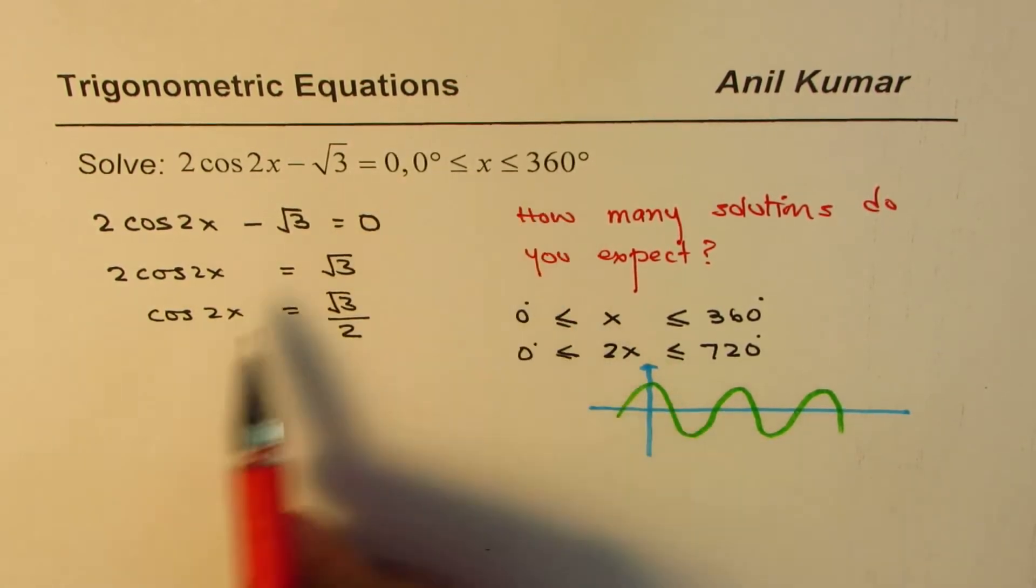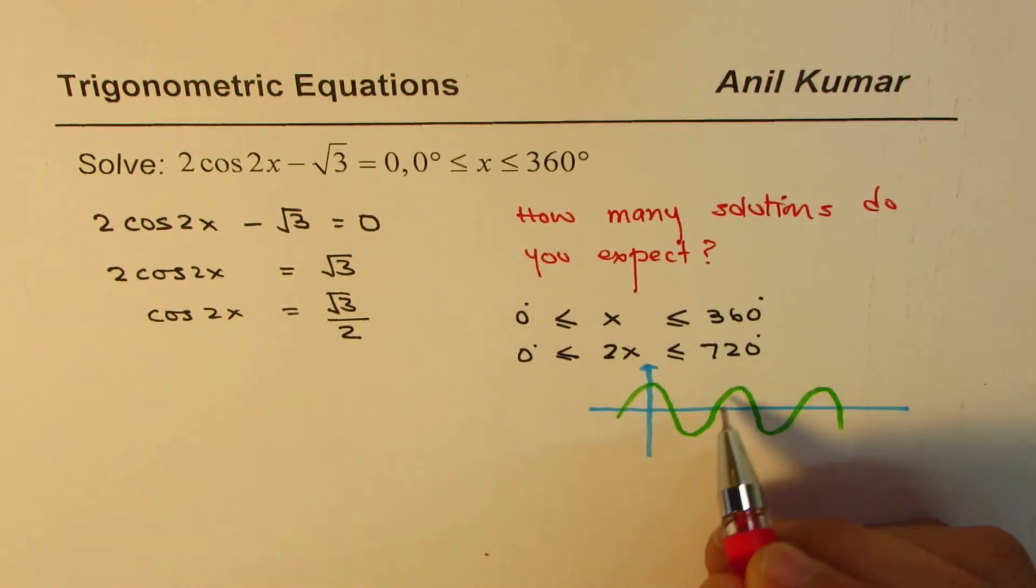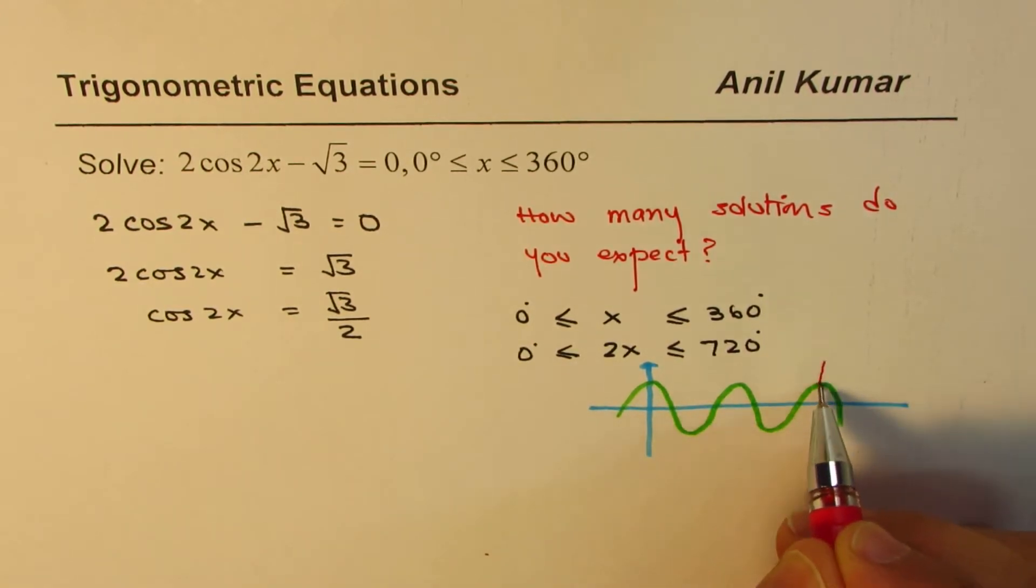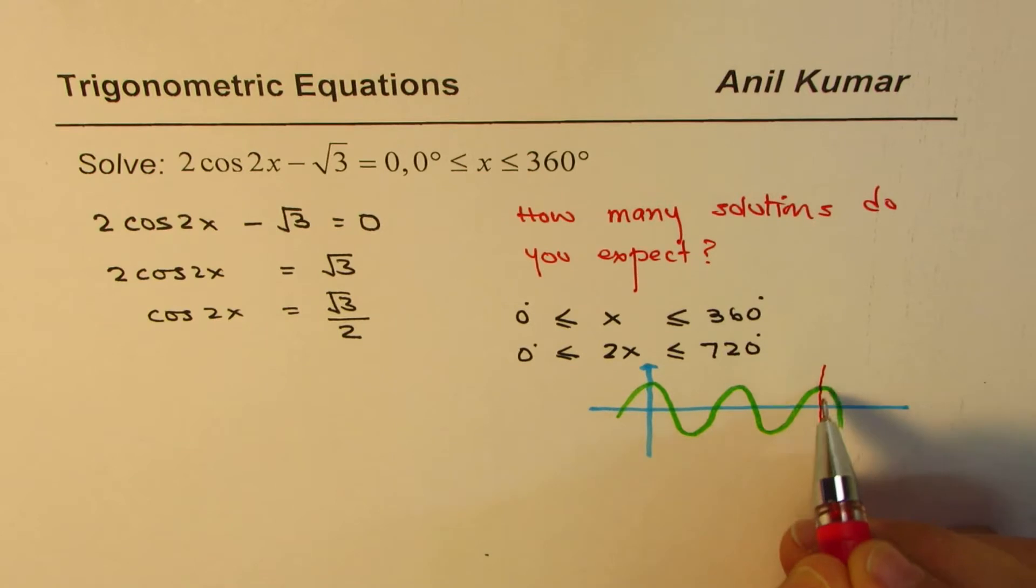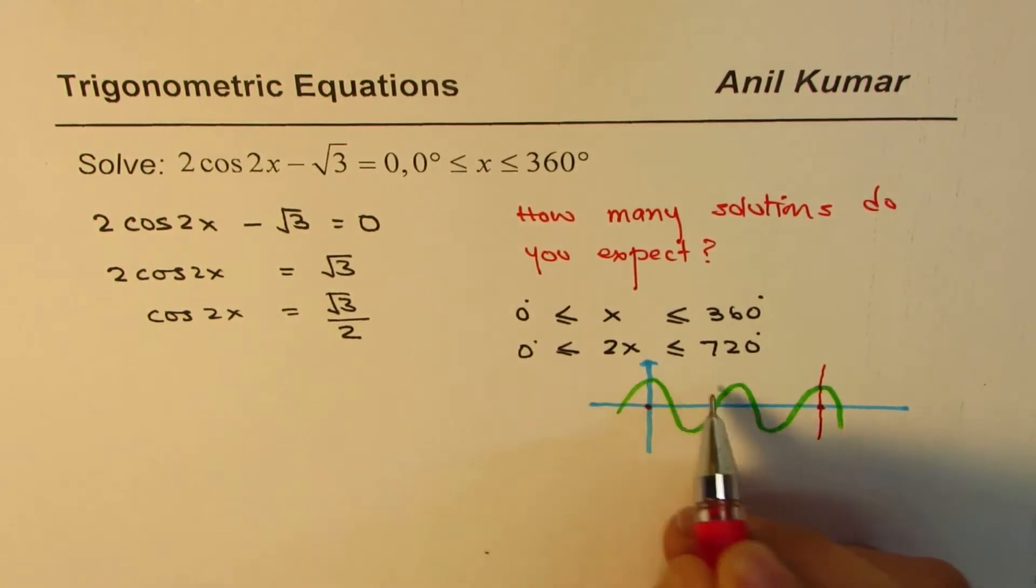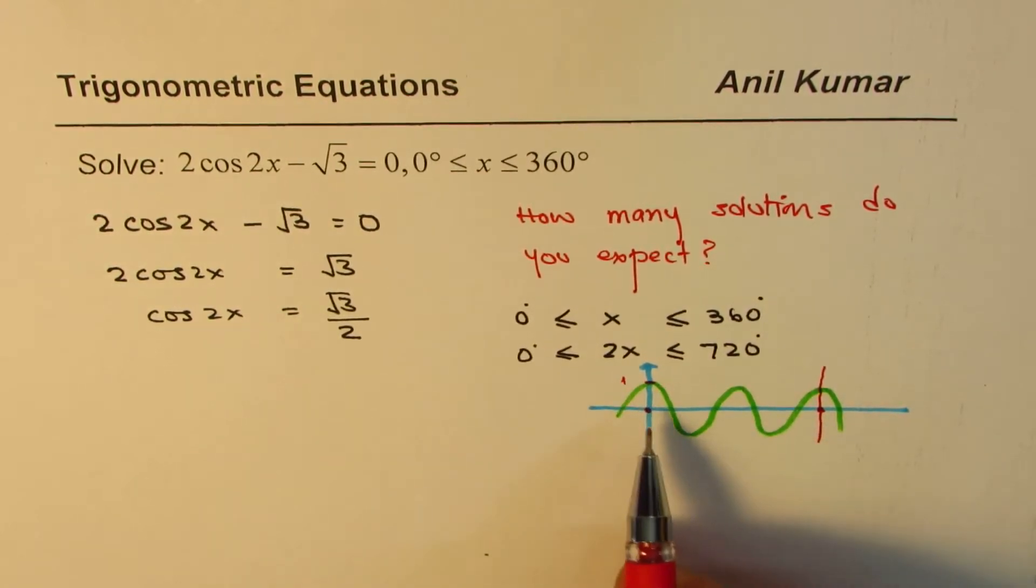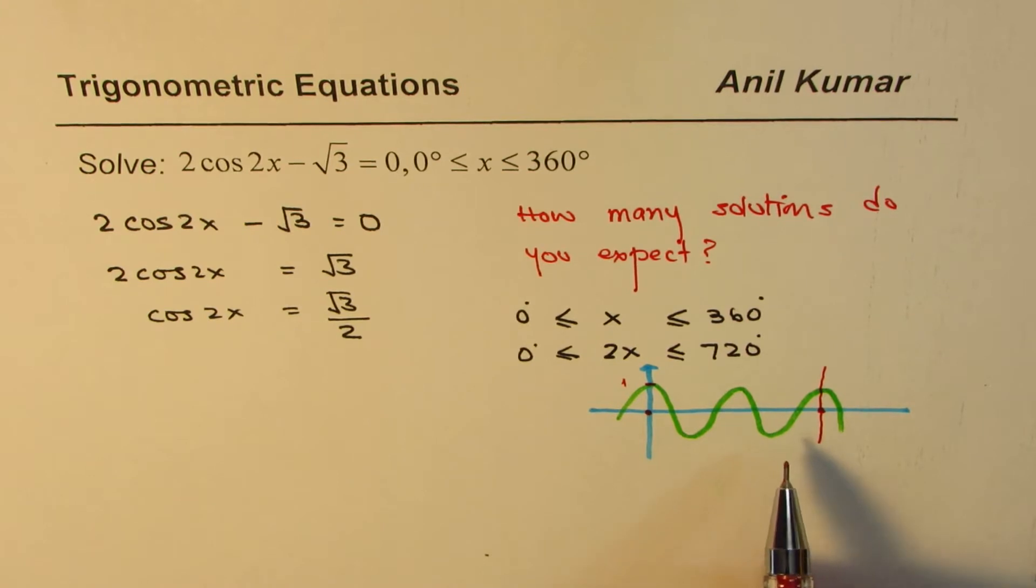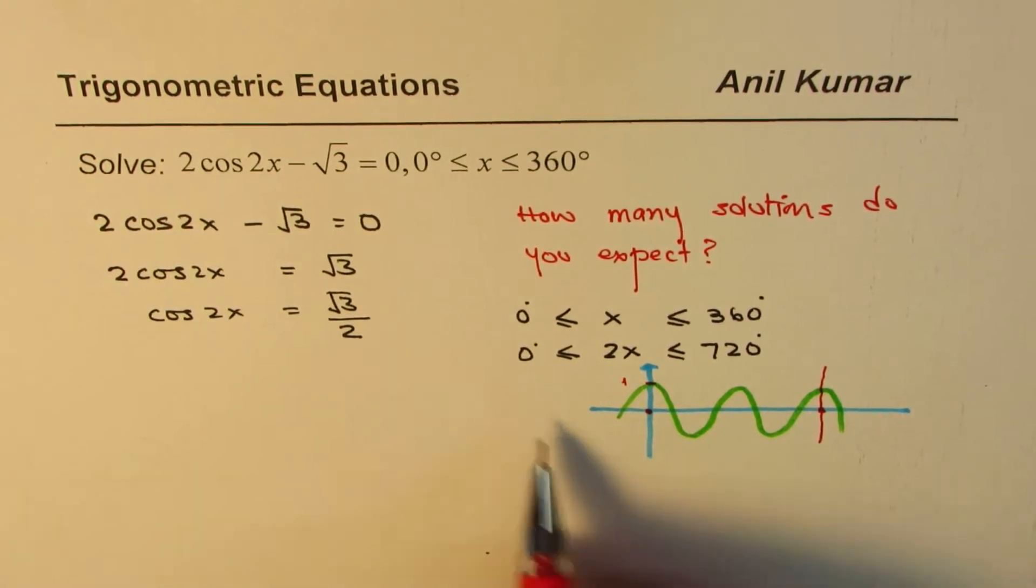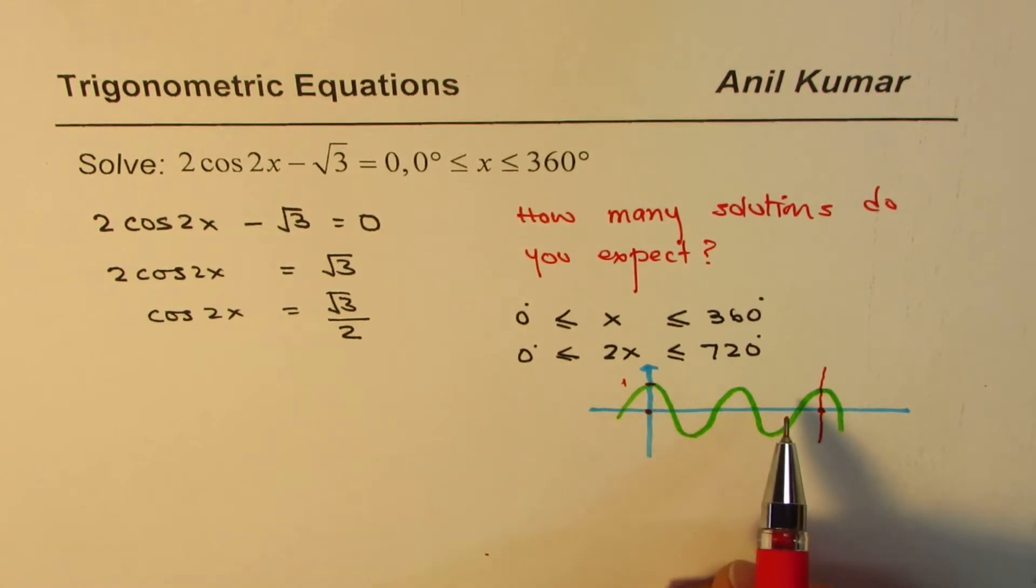When we say 0 to 360 for cos 2x we'll have two waves. That will be this from here to here. Do you see that? That is what it is. And now we are looking for a positive square root 3 by 2. So that means somewhere in between.